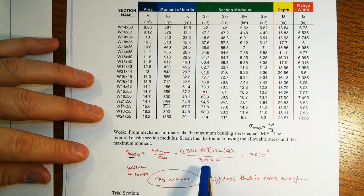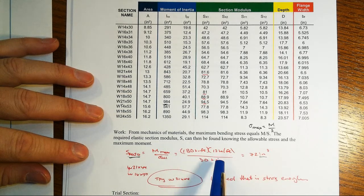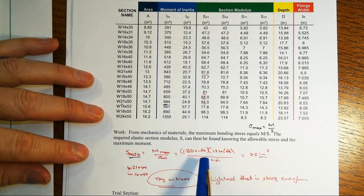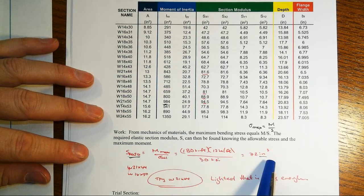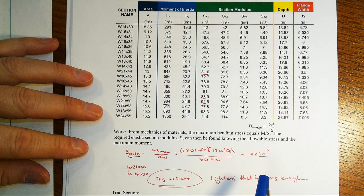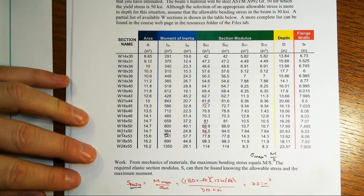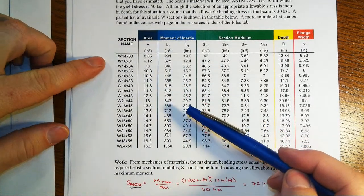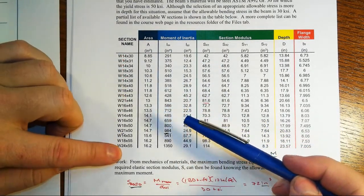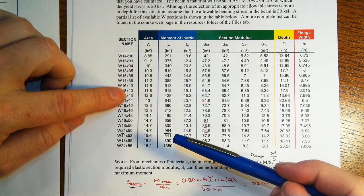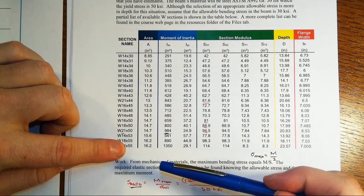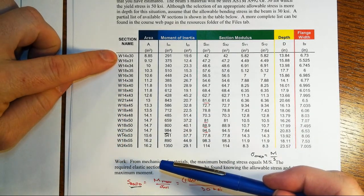180 kip feet, turn it into kip inches, right? Because we're going to take that and divide by kips per square inch so that we end up with inches cubed. So 180 times 12 divided by 30, that gets you to 72 cubic inches, right? And so from that we can come look up in our table.